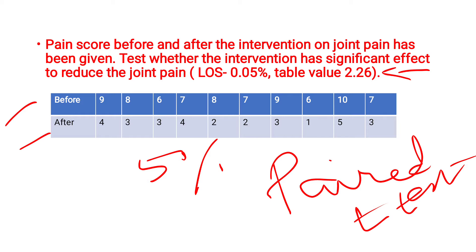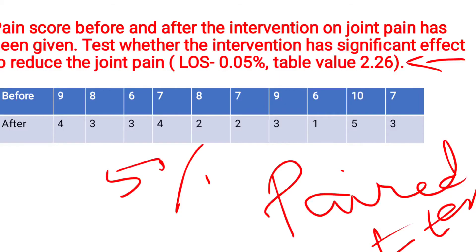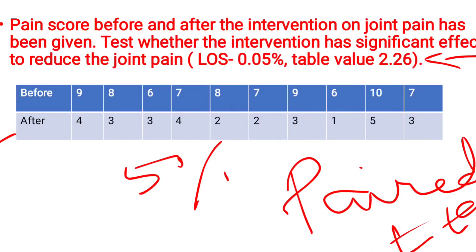The before-intervention pain score values are: 9, 8, 6, 7, 8, 7, 9, 6, 10, 7. After the intervention, the pain score values are: 4, 3, 3, 4, 2, 2, 3, 1, 5, 3. By seeing these values you can tell that the intervention is effective in reducing pain, but we have to prove it statistically. So we can use a paired T-test.